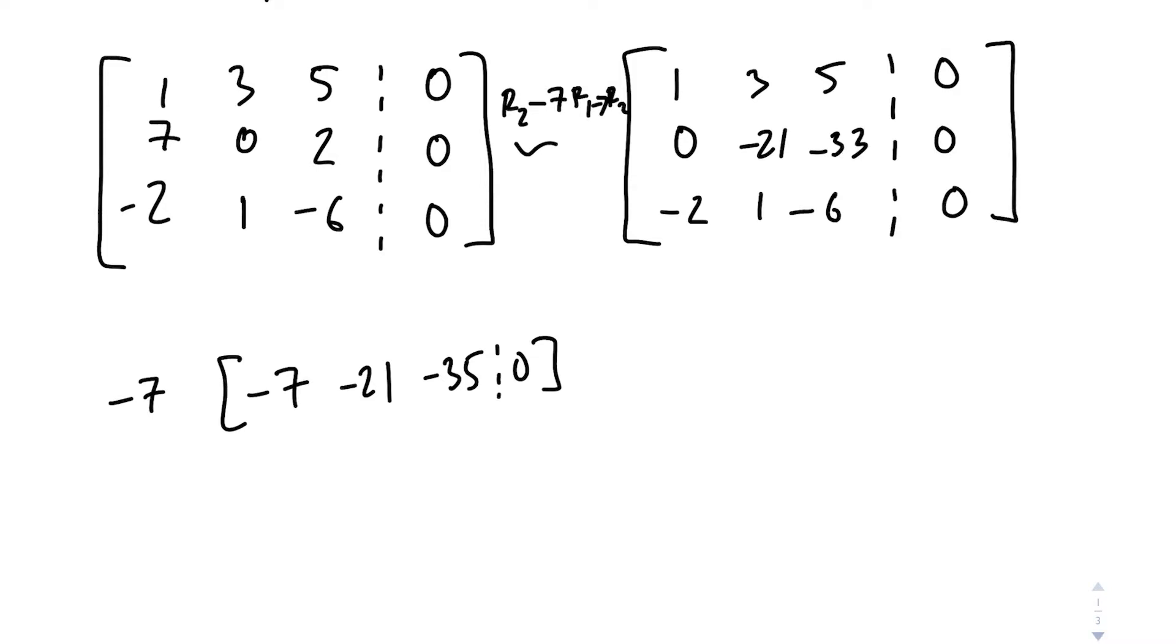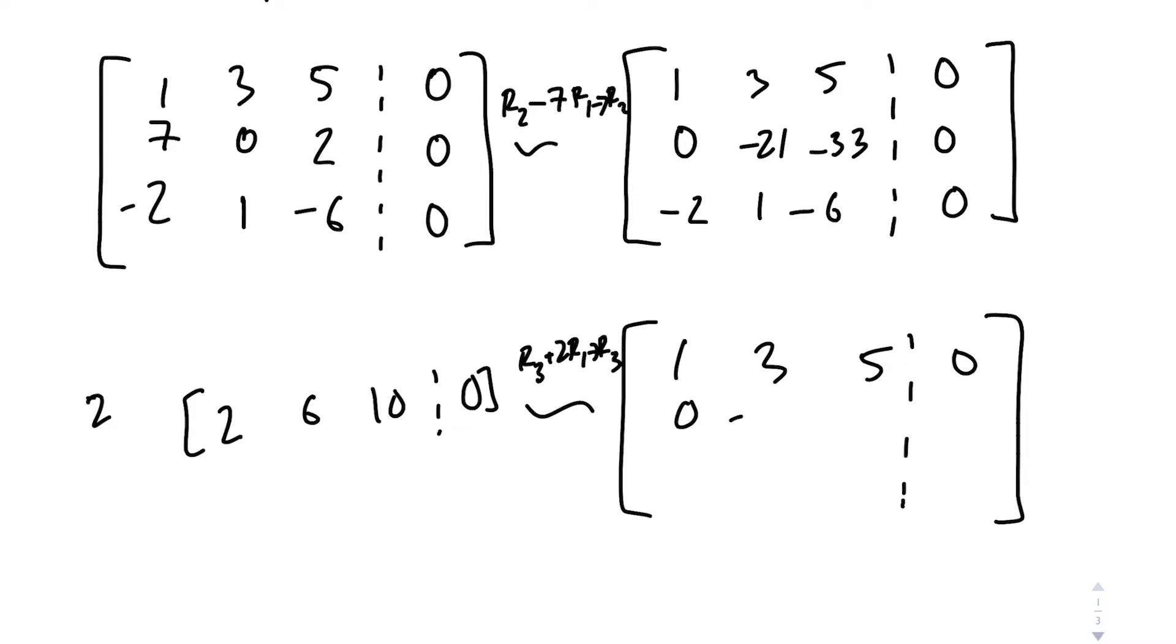But your journey does not end here. We have to do some more row operations. So I still like that 1. So let's multiply by 2 so we can cancel with that negative 2. So 2, 6, 10, 0. This row operation is row 3 plus 2 row 1 back into row 3. So we're not changing row 1 or row 2, but we are changing row 3. So 2 plus negative 2 is 0. 6 plus 1 is 7, 4, 0.